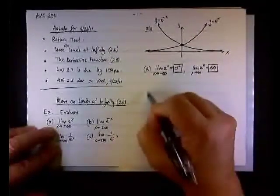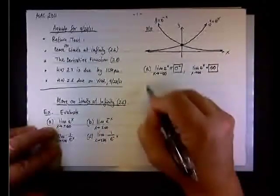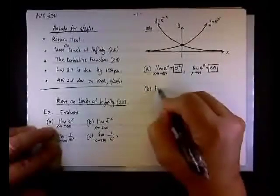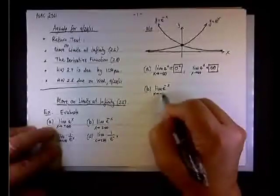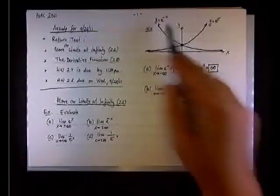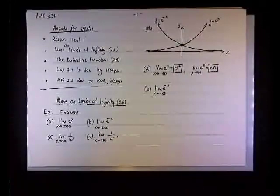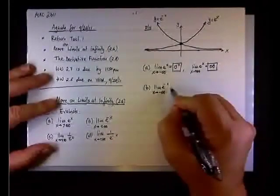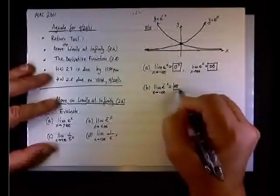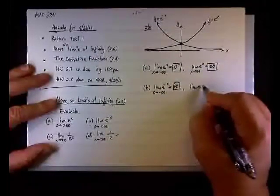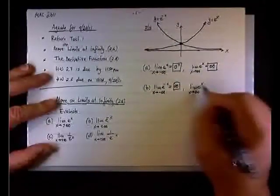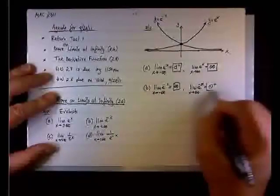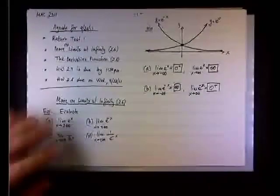What about b? For part b, we are looking at the limit of e to the negative x as x goes to negative infinity. When x is a large negative number, we have e to the negative of a negative number, so it becomes e to a positive number, and this thing will blow up — it goes to positive infinity. On the other hand, if x is a positive number, then the limit of e to the negative x will go to zero again from the plus side, as we can see on this end of this curve.